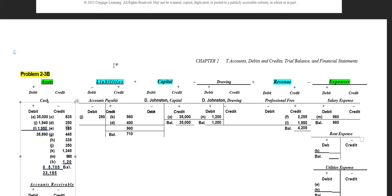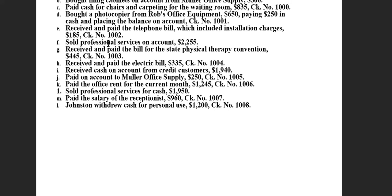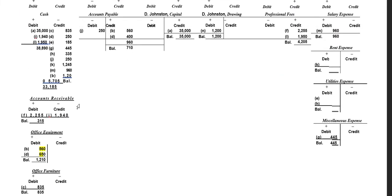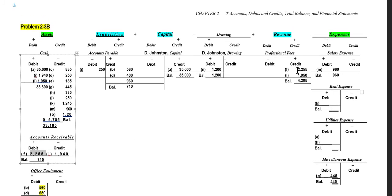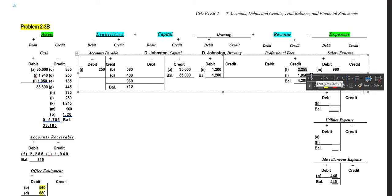Next, we sold professional services on account. We provided the service but have not received payment — it is put on account for a customer. The firm earned revenue from professional services and expects to receive the money in the future. We increase accounts receivable with a debit for the total amount and increase revenue with a credit for $2,255.